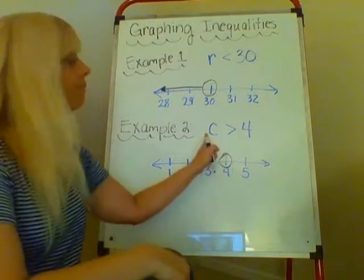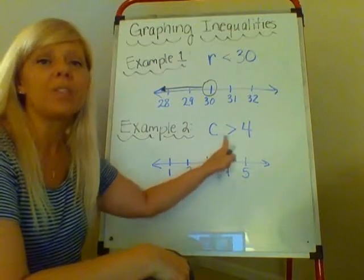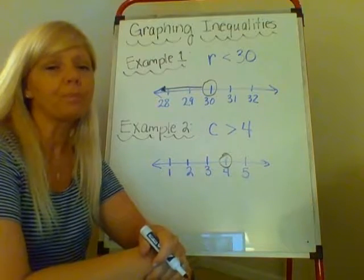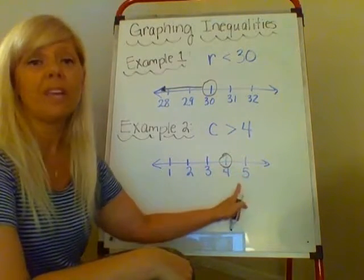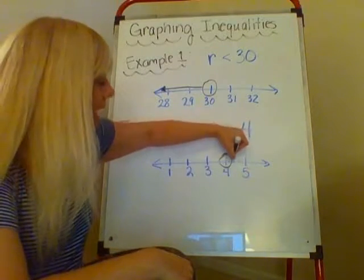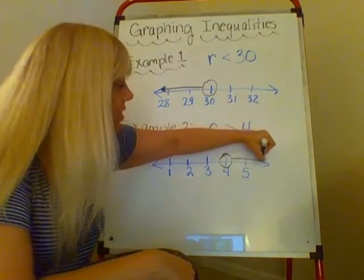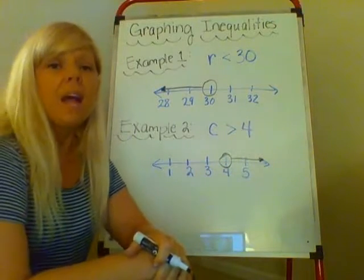And I want any rational number that's bigger than four or greater than four. So I know that five is greater than four, so I'm going to go ahead and draw my arrow towards the larger numbers.